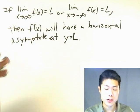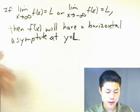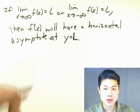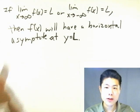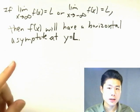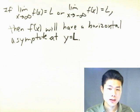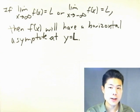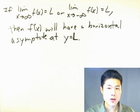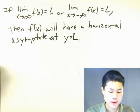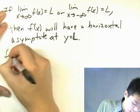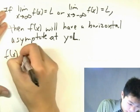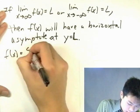We'll see an example in which the graph will actually cross a horizontal asymptote — so it's okay if it crosses. What matters is the ends. As long as the extreme left and right ends don't cross a horizontal asymptote, then it is a horizontal asymptote.